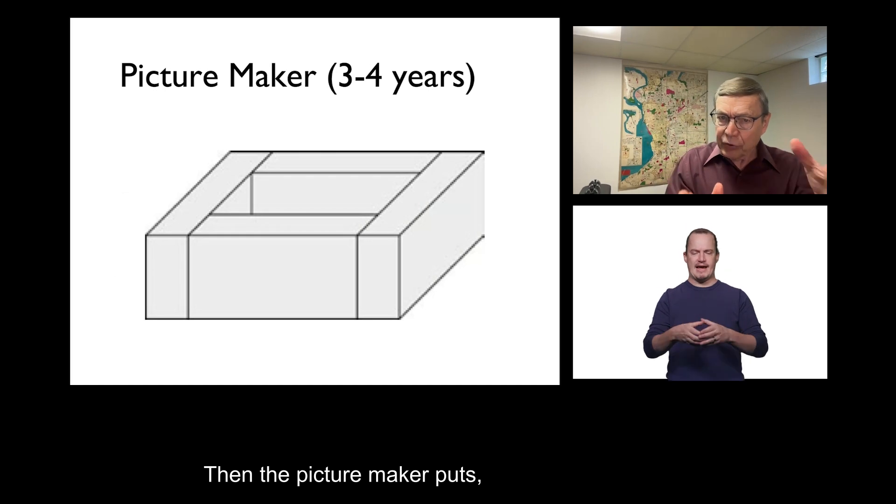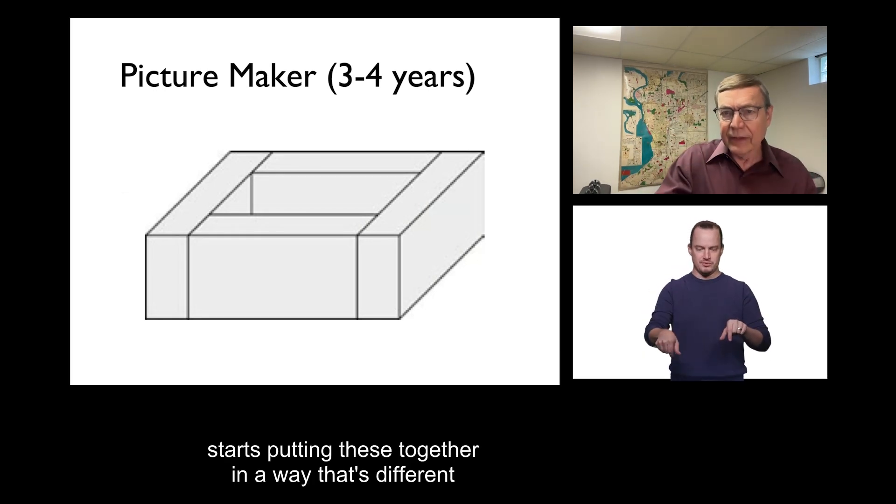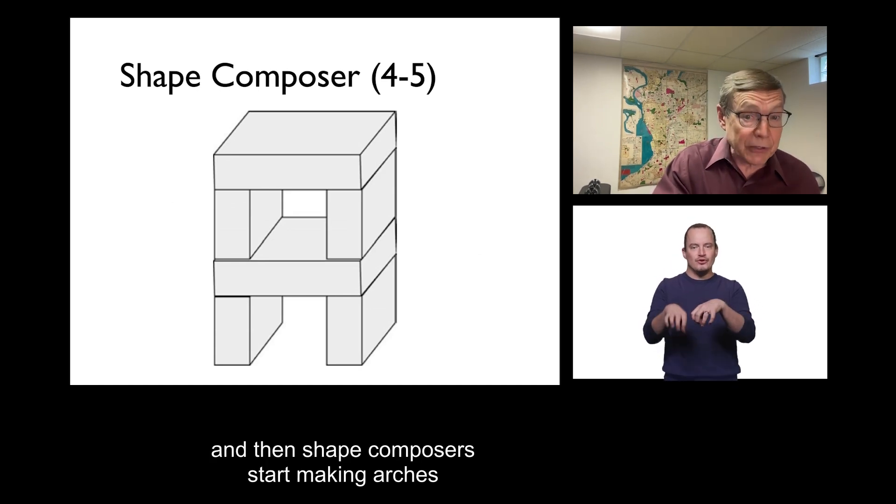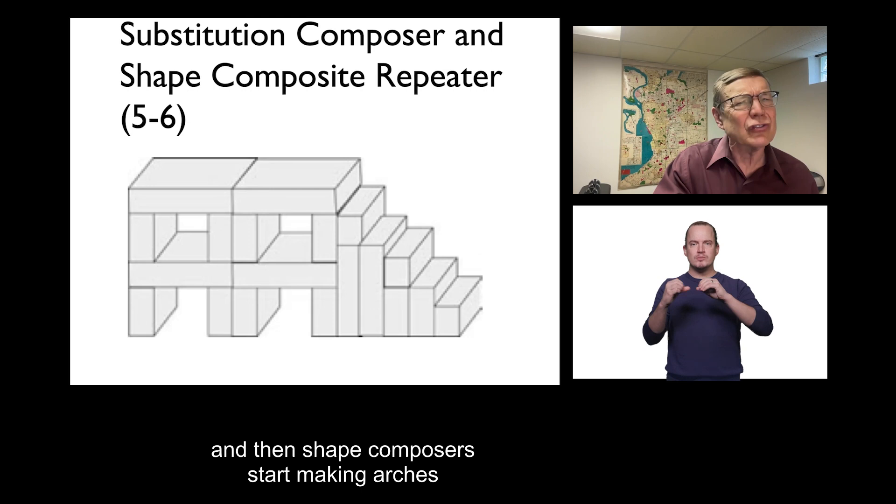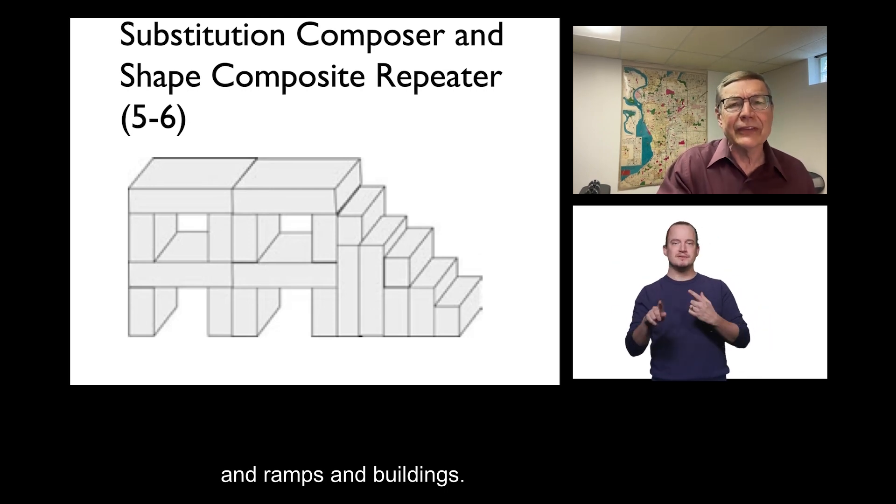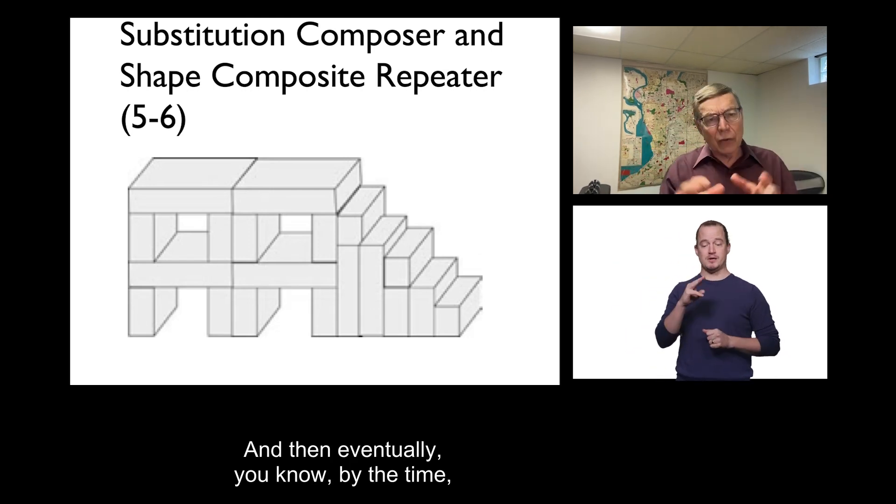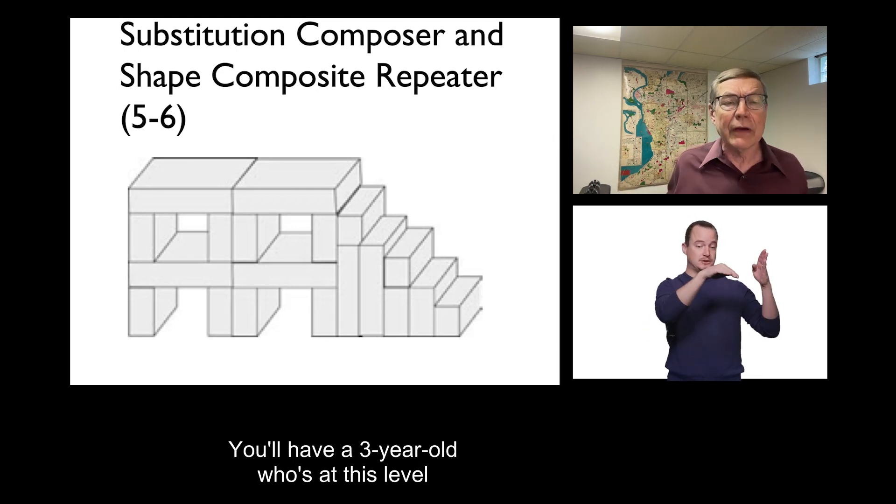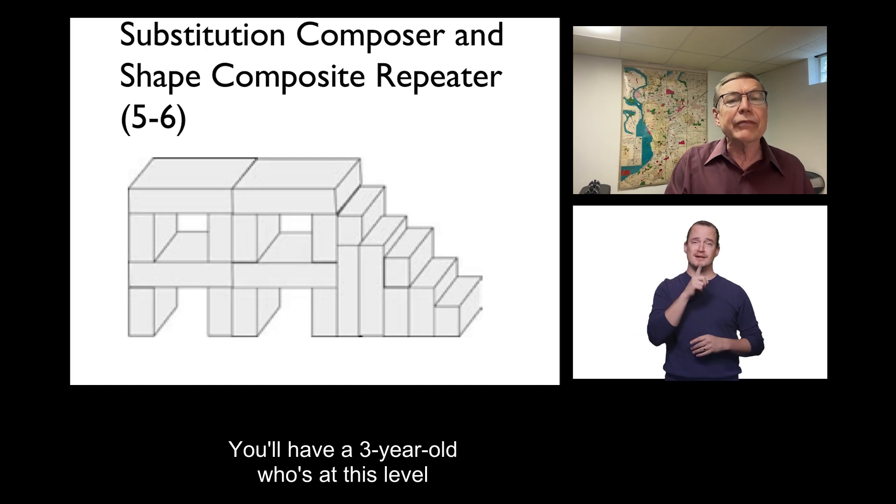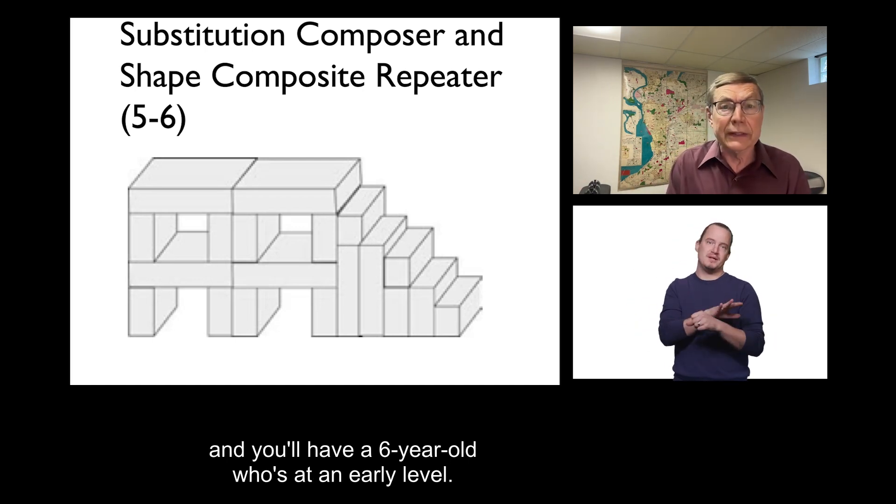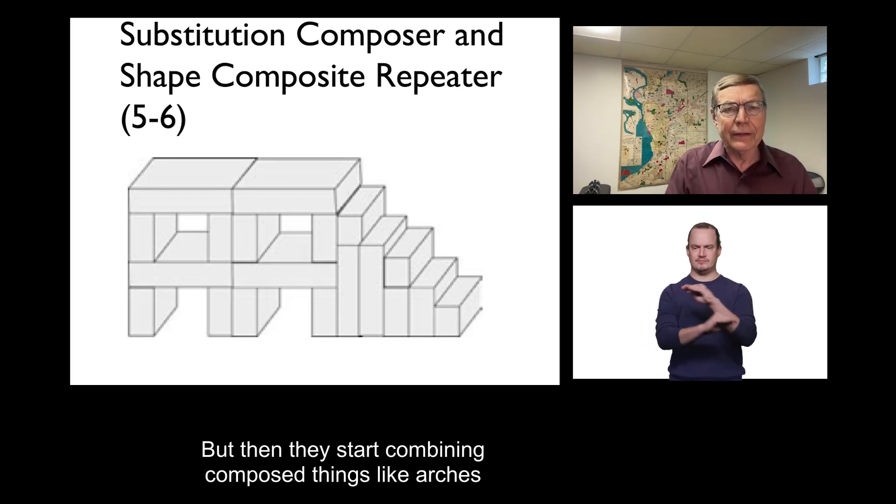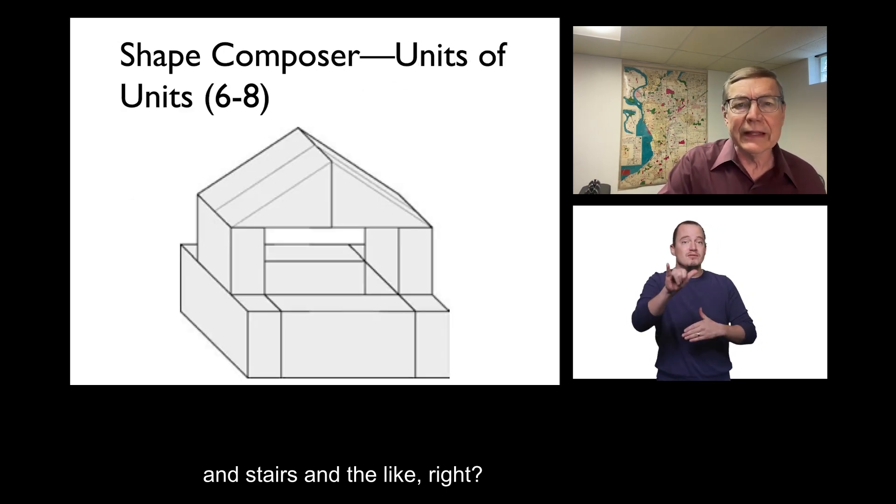Then, the picture maker starts putting these together in a way that's different to make other things. And then, shape composers start making arches and ramps and buildings. And then, eventually, you know, by the time, and these ages are completely average. You'll have a 3-year-old who's at this level and you'll have a 6-year-old who's at an early level. These are just averages. But then, they start combining composed things like arches and stairs and the like.